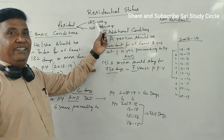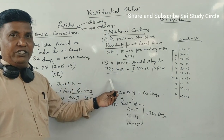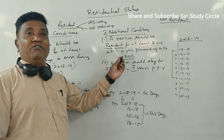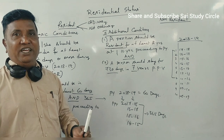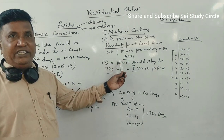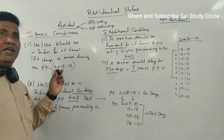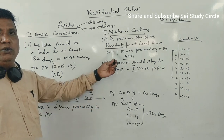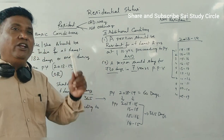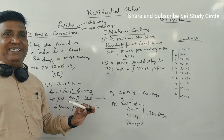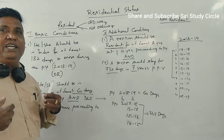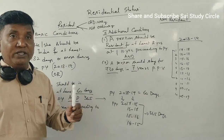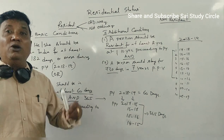To summarize: an ordinary resident is a person who satisfies any one of the basic conditions AND both additional conditions. A not-ordinary resident is one who satisfies any one of the basic conditions but fails to satisfy both additional conditions. A non-resident is one who does not satisfy any one of the basic conditions. This topic carries minimum 8 marks in the examination — 6 marks for detailed questions and 2 marks for definition-type questions.